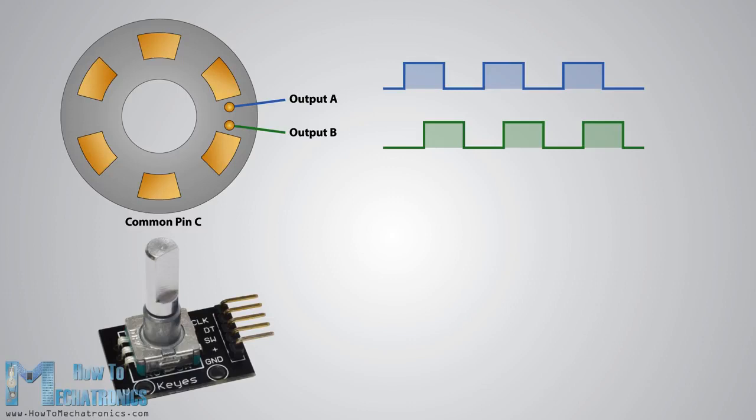Any of the two output pins can be used to determine the rotation position if we just count the pulses of the signal. However, if we want to determine the rotation direction as well, we need to consider both signals at the same time.